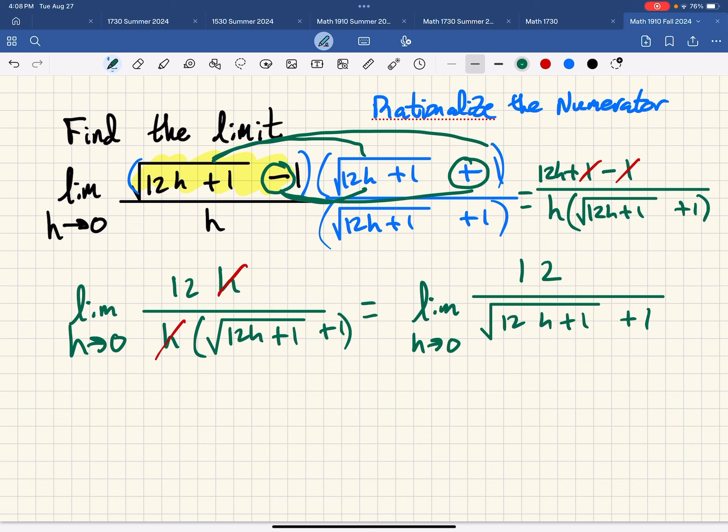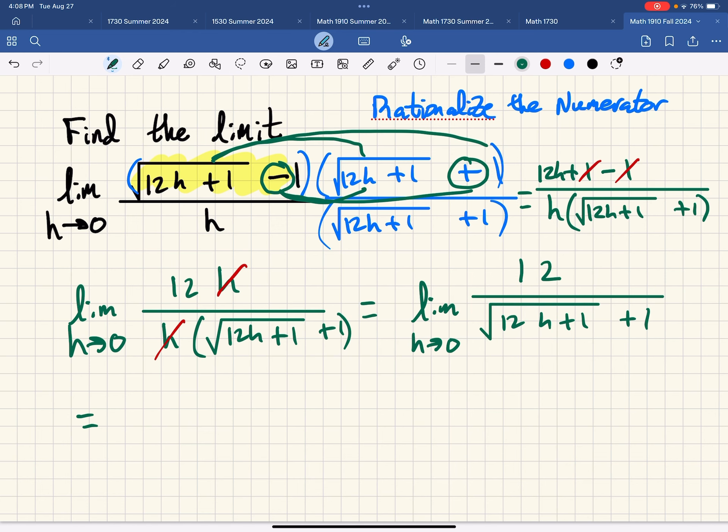And now we can substitute 0 for h. And so we would have 12 divided by square root of 12 times 0 plus 1 plus 1. So we have 12 over 1 plus 1. 12 over 2 equals 6.